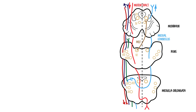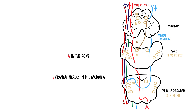The third rule is that there are four cranial nerves in the medulla, which is the bottom part of the brainstem; four cranial nerves in the pons; and four cranial nerves above the pons — two in the midbrain and two above. So above the pons, there are cranial nerves one, two, three, and four.